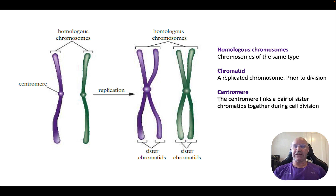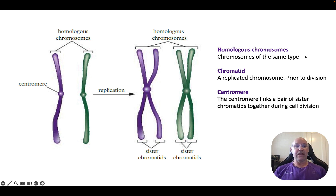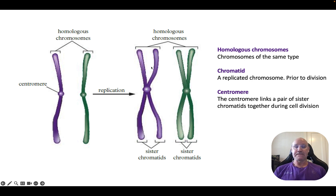A bit more terminology: DNA replication is required before cell division — both in making somatic cells via mitosis and in making gametes via meiosis. Before cell division we need replication, so we actually need two versions of each homologous chromosome, giving us a total of four. We call these chromatids — a replicated chromosome — specifically sister chromatids: two from mum and two from dad, joined together at the centromere.